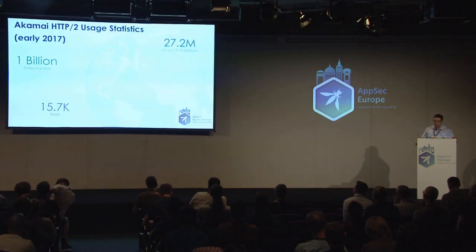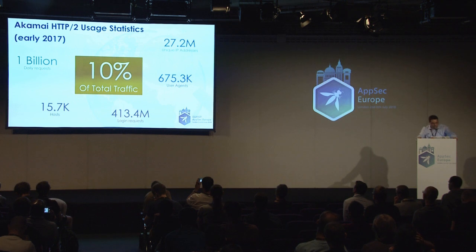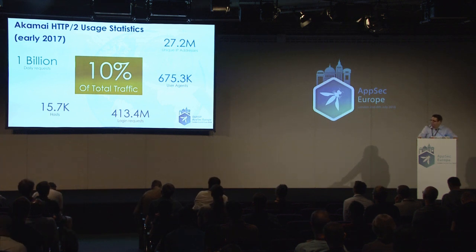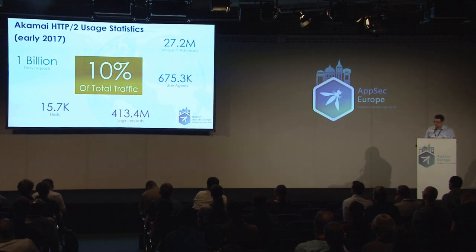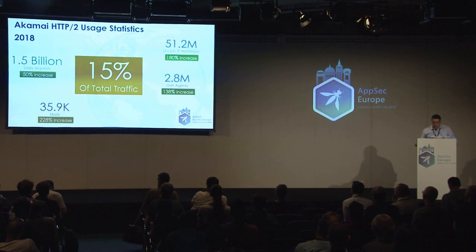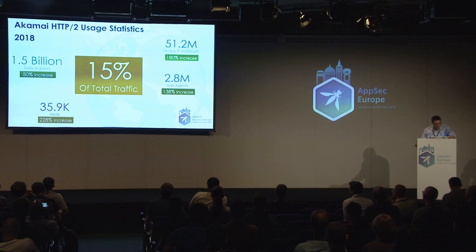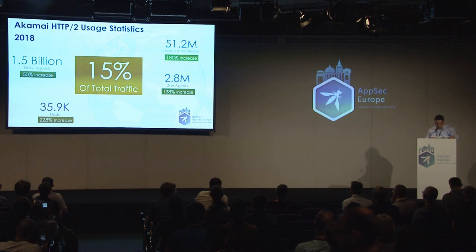At the time of the research, which was early 2017, this was the state of H2 statistics we've seen. It was approximately 10% of the traffic, one billion requests per day. We've seen approximately 30 million IPs using it, thousands of hosts, and almost more than half a million user agents. But for this presentation, I wanted to bring some more updated data — it's been more than a year, and the data is astounding: more than 50% increase in overall traffic and twice the number of IPs and hosts using it.